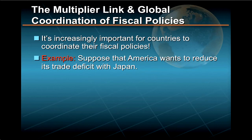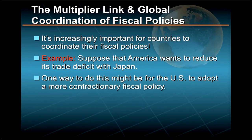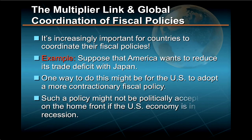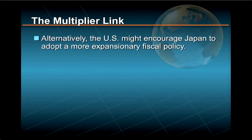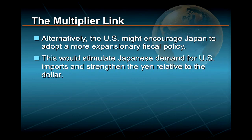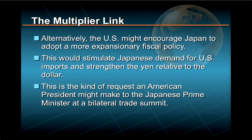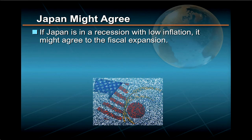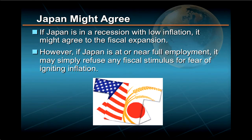For example, suppose that America wants to reduce its trade deficit with Japan. One way to do this might be for the U.S. to adopt a more contractionary fiscal policy. However, such a policy might not be politically acceptable on the home front if the U.S. economy is in recession. Alternatively, the U.S. might encourage Japan to adopt a more expansionary fiscal policy as a way of stimulating Japanese demand for U.S. imports and strengthening the yen relative to the dollar. This is precisely the kind of request that an American president might make to the Japanese prime minister at a bilateral trade summit. Such a coordinated macroeconomic approach can work, but only if each country benefits. If Japan is in a recession with low inflation, it may well agree to the fiscal expansion. However, if Japan is at or near full employment, it may simply refuse any fiscal stimulus for fear of igniting inflation.